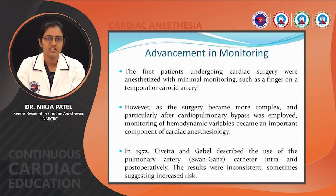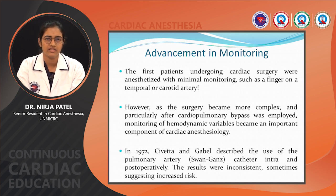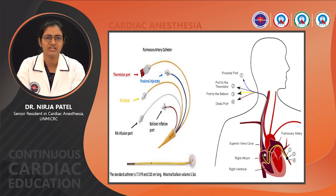Coming to advancement in monitoring: the first patients undergoing cardiac surgery were anaesthetised using just basic monitoring like a finger on the temporal or carotid artery. Because cardiac surgeries are more complex, particularly with the use of cardiopulmonary bypass, monitoring of haemodynamics became very vital. In 1972, Kivet and Gabel described the use of the pulmonary artery catheter intra- and postoperatively. The results were inconsistent — sometimes suggesting increased risk — but it was beneficial in patients with severe heart dysfunction.